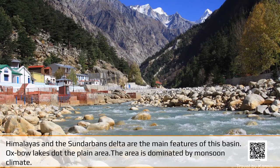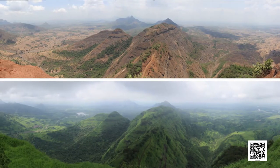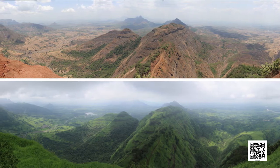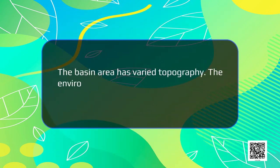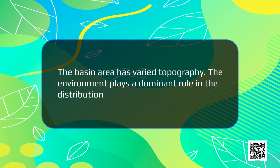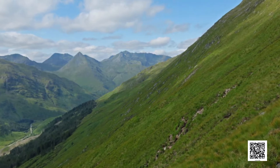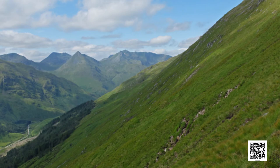Oxbow lakes dot the plain area. The area is dominated by monsoon climate. The monsoon brings rains from mid-June to mid-September. The summers are hot and the winters are cool. The basin area has varied topography. The environment plays a dominant role in the distribution of the population. The mountain areas with steep slopes have inhospitable terrain, and therefore, fewer people live in the mountain area of the Ganga-Brahmaputra Basin.